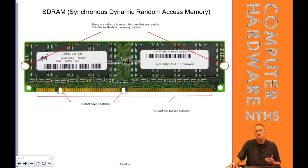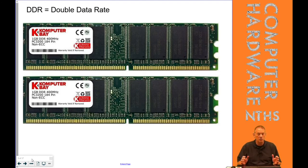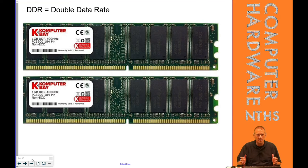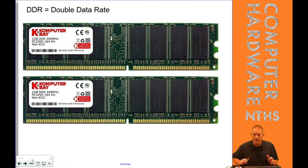SDRAM ran at 133 megahertz, and the very first stick of DDR came out at 266 megahertz. So while originally the name actually meant something — it was double the data rate of the previous model — it really doesn't mean that anymore. When we talk about DDR, DDR2, DDR3, and DDR4, it doesn't mean it got twice as fast, three times as fast, and four times as fast.